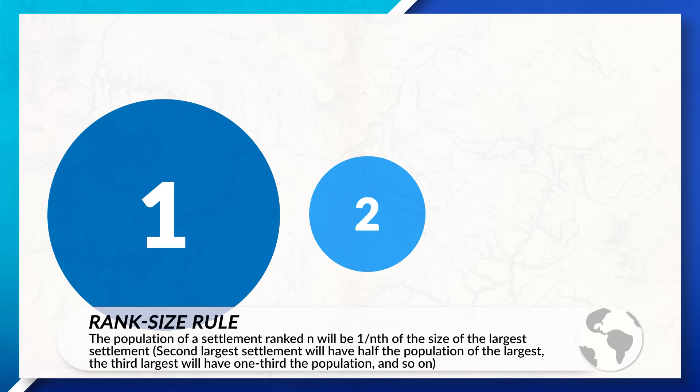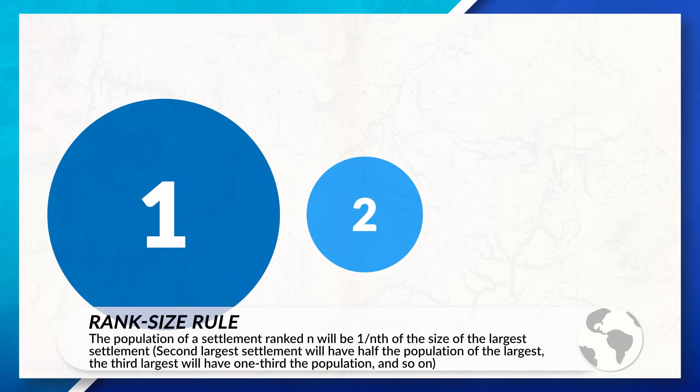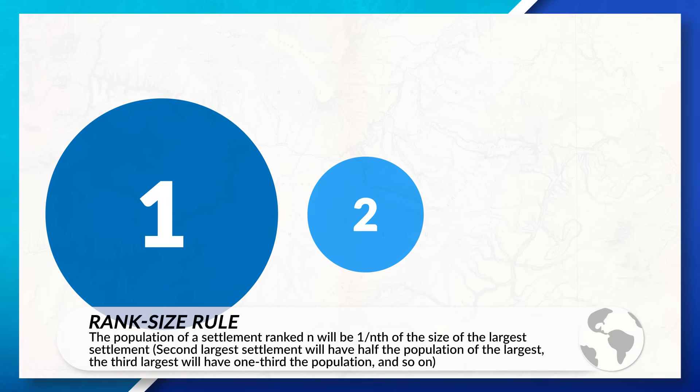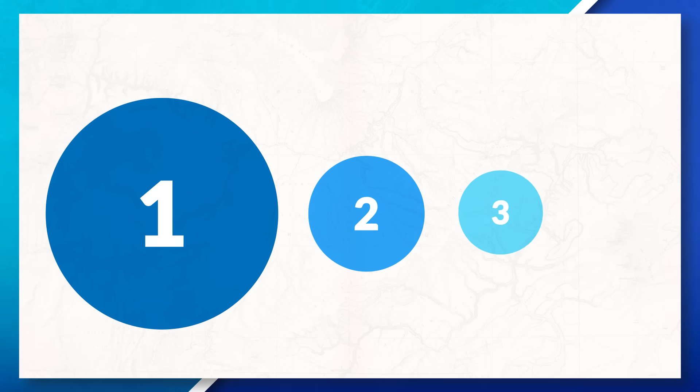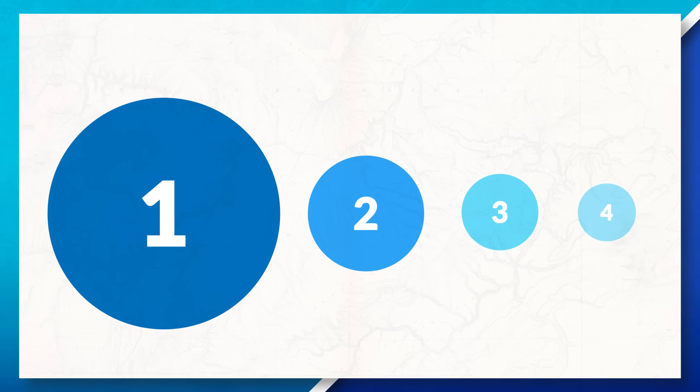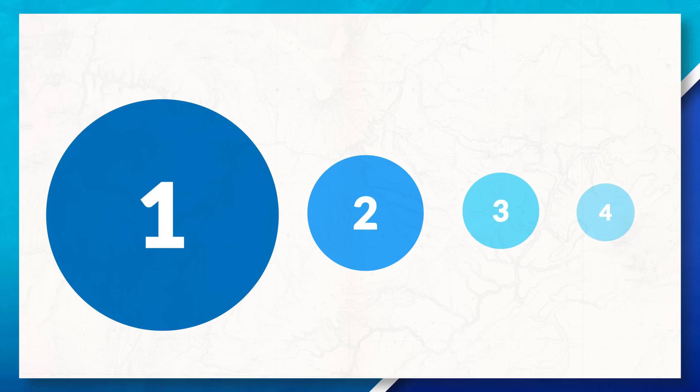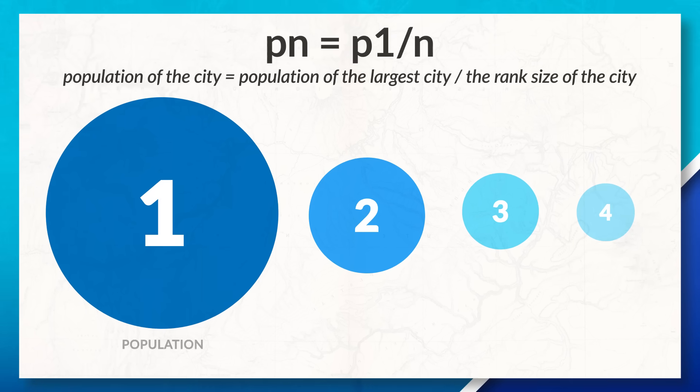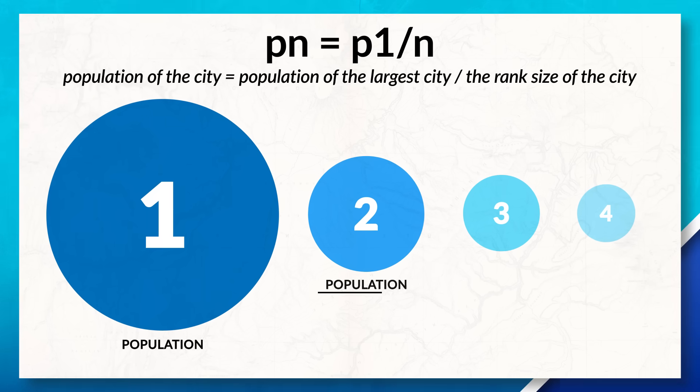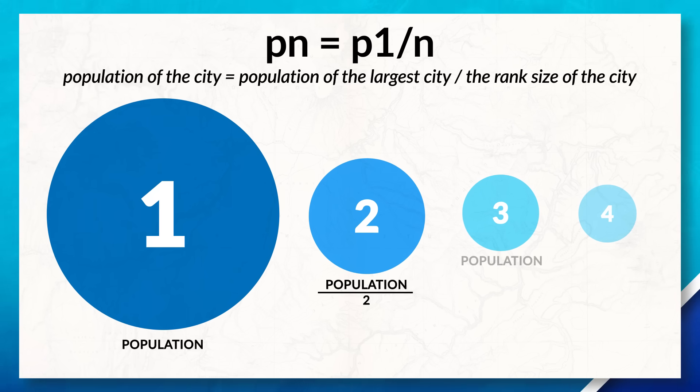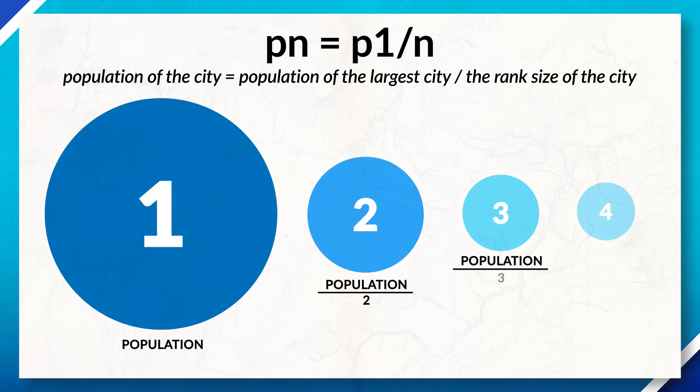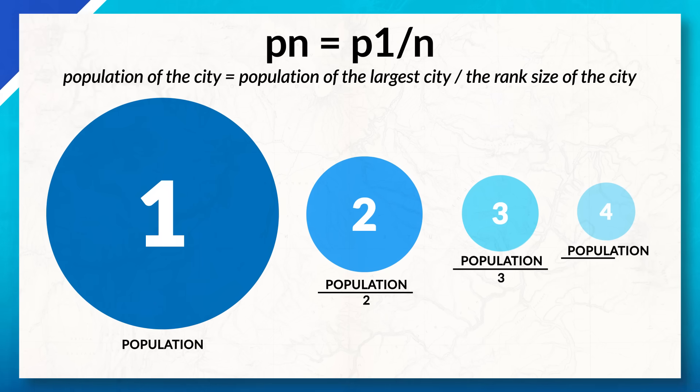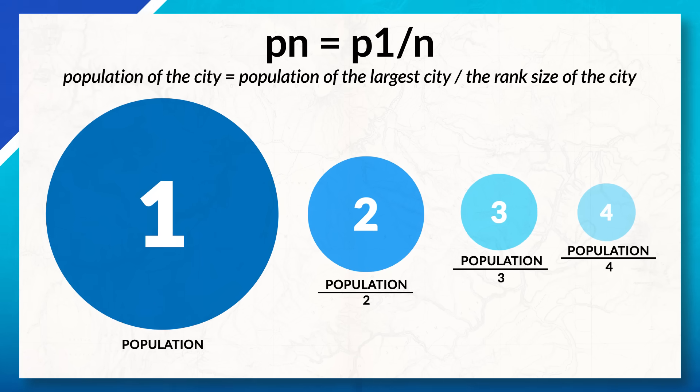Now some countries don't have a primate city and instead follow the rank size rule. This happens when the second largest city in a country has about half the population of the largest city, with the third largest city having a third of the population as the largest city. The fourth city being a fourth as large as the largest city and so on. So we can see if a country follows the rank size rule, we will take the population of the largest city and divide it by two to get the population of the second largest city, three to get the population of the third largest city, and by four to get the fourth largest city.